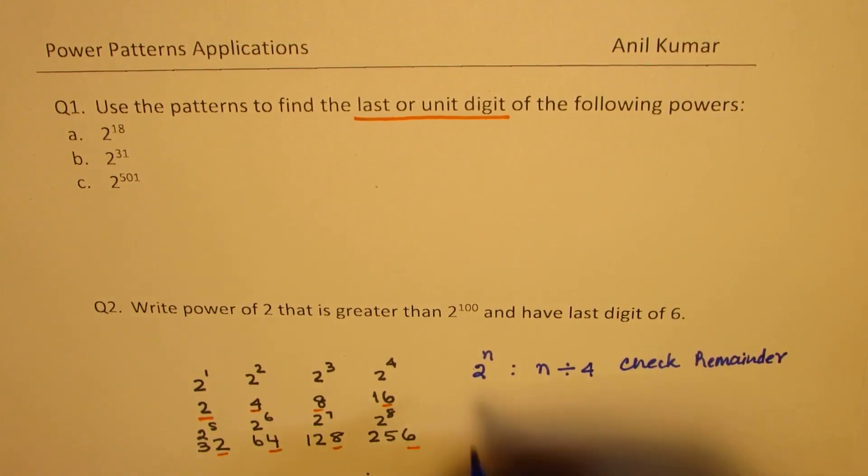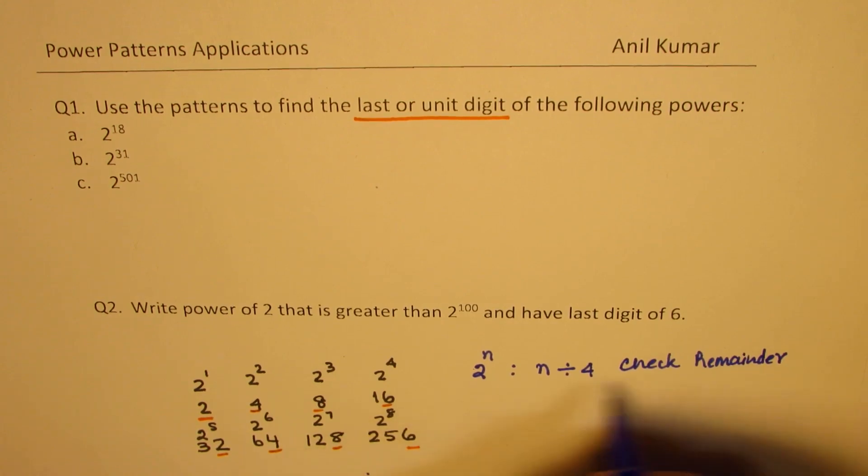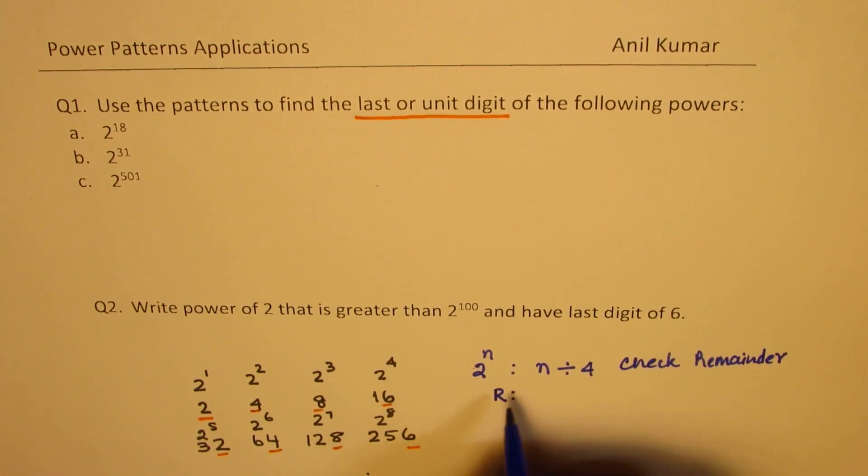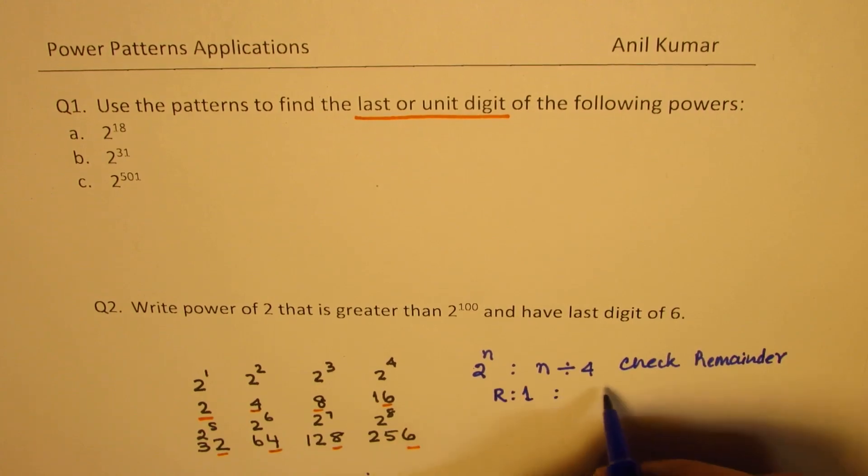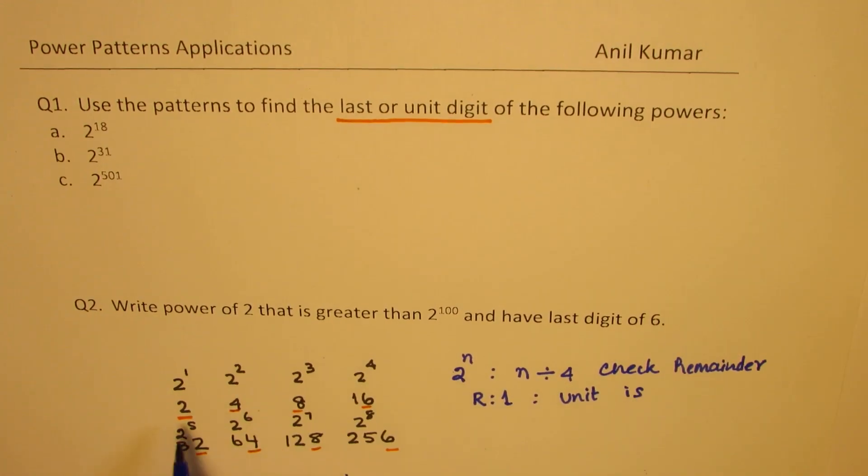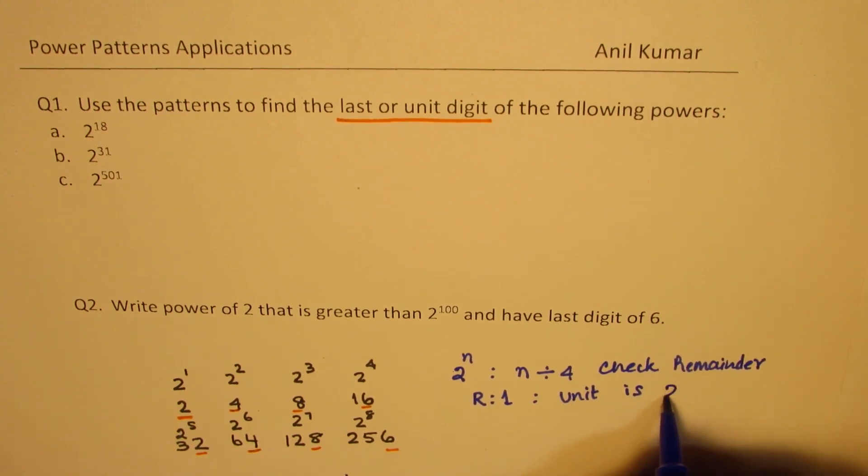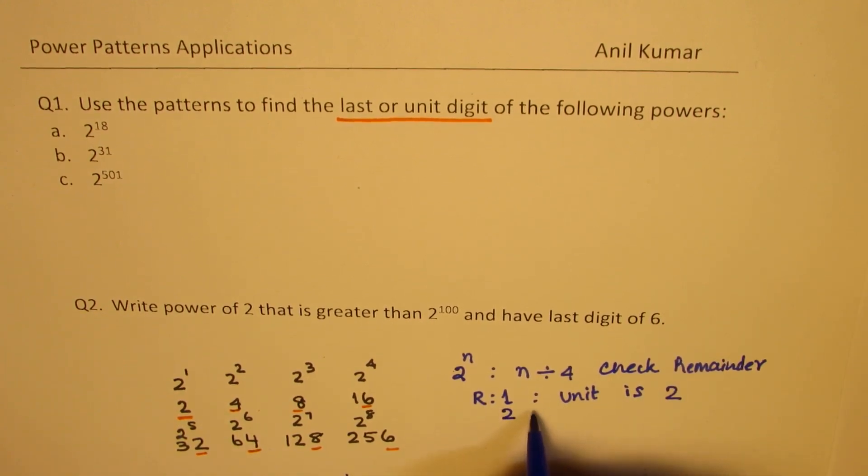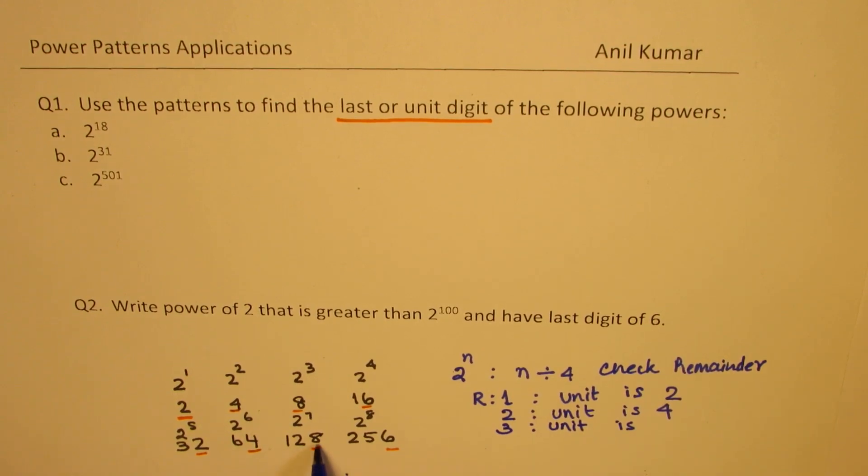Now, if the remainder is 1, in that case, the unit place is 2. Do you see that? For one remainder, unit place is 2, as in 2 or in 32. So, the unit is 2. But if the remainder is 2, then the unit place value is 4. If the remainder is 3, in that case, unit is 8.